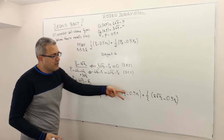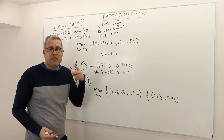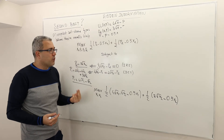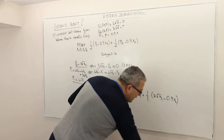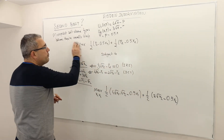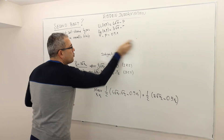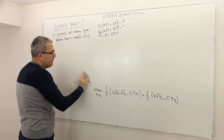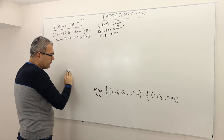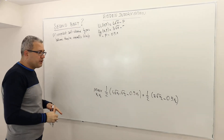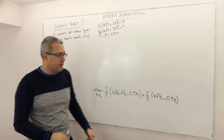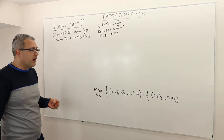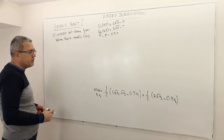To maximize this function with two parameters x1 and x2, we use first order conditions: take the partial derivative with respect to x1, set it equal to 0, then take the partial derivative with respect to x2, set it equal to 0, and solve to find x1 and x2.